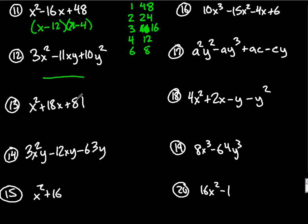Number 13, factors of 81 to add to 18 are 9 and 9. So x with 9, x with 9. Bigger number gets the sign in front. Well, they're both positive because they're both equally big. Another way to write this would be x plus 9, the quantity squared.